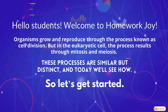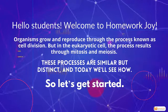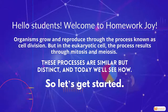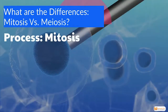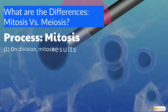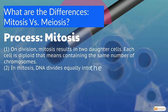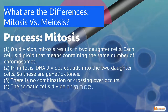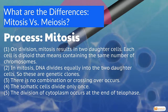In mitosis, cell division results in two daughter cells. Each cell is diploid, containing the same number of chromosomes as the parent. DNA divides equally into the two daughter cells, making them genetic clones. There is no recombination or crossing over, and somatic cells divide only once.